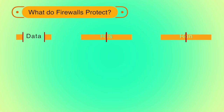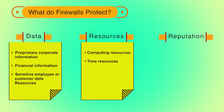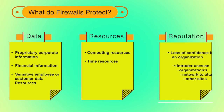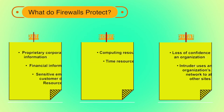What do firewalls protect? Firewalls protect not only data but also resources and reputation. Data covers proprietary corporate information, financial information, and sensitive employee or customer data. Resources covers computing resources and time resources. Reputation covers loss of confidence in an organization or cases where intruders use an organization's network to attack other sites.